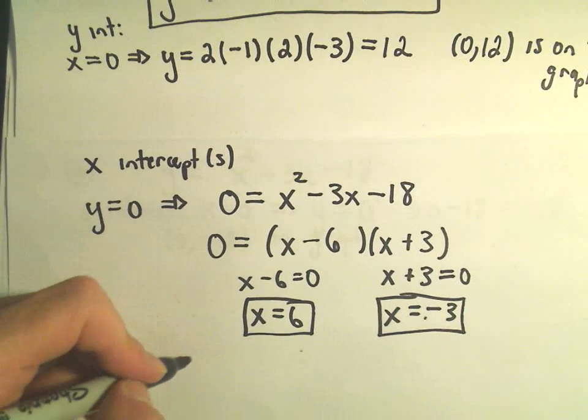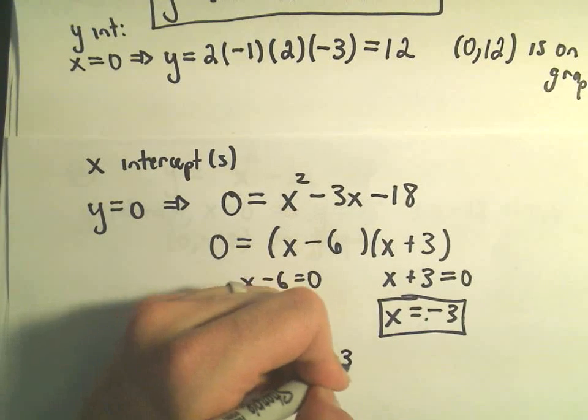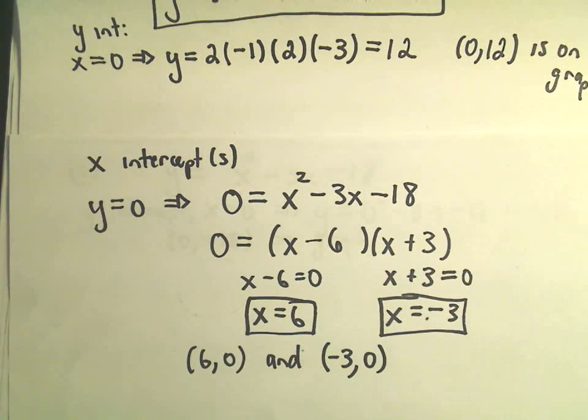So now we've found our two x intercepts, at the point 6 comma 0, and there's a second x intercept at negative 3 comma 0.